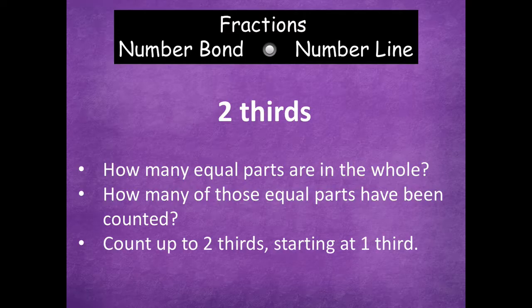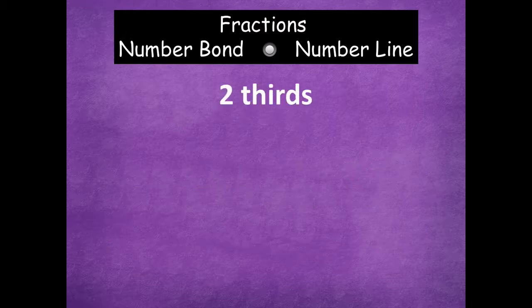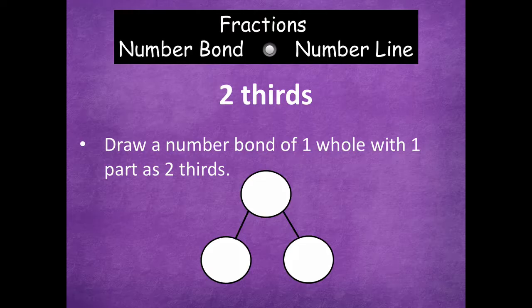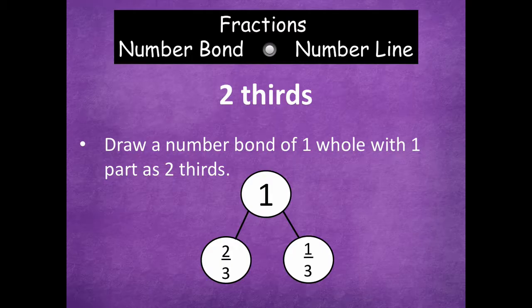We're going to count up to two-thirds starting at one-third: one-third, two-thirds. That's just a quick review. Now we're going to draw a number bond of one whole with one part as two-thirds. The whole is one, and one part is two-thirds, so what's the other part? Yeah — one-third, because two-thirds plus one-third equals a whole. Three-thirds is another way to represent one whole.